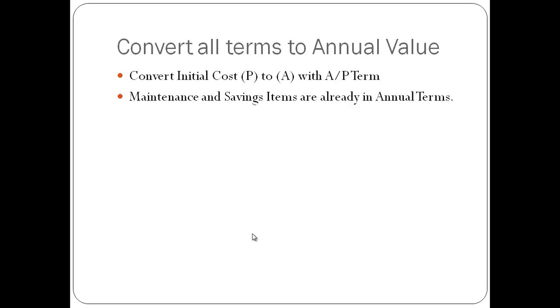To convert the initial cost, use the A over P term found in your factor tables. The maintenance and saving items are already in annual terms and do not need to be converted. And finally, there is no salvage value that needs to be converted.